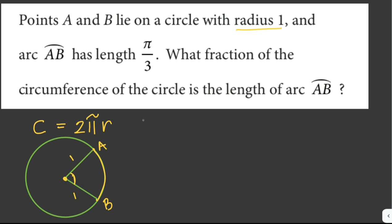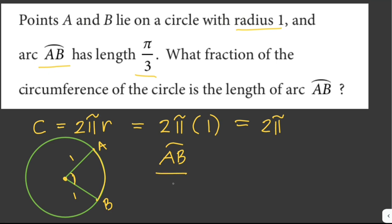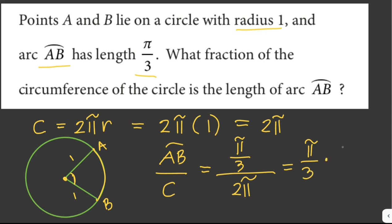Let's solve for the circumference first: C = 2π × 1 = 2π. We're given that the length of arc AB equals π/3. So the fraction is (π/3) / (2π) = (π/3) × (1/2π). The π cancels out, giving us 1/6.